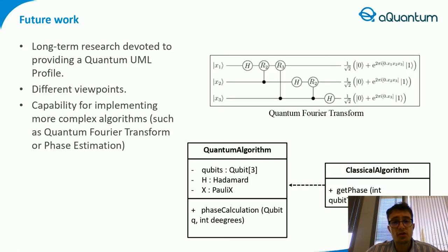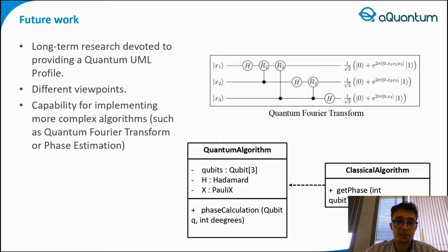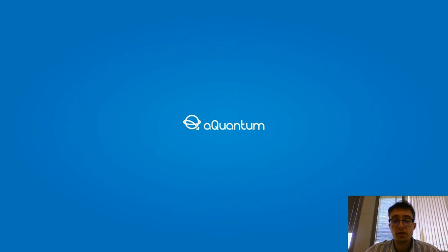This presentation proposes the UML extension as part of more extensive long-term research devoted to providing a quantum UML profile that will cover other viewpoints and aspects of the analysis and design of hybrid information systems. For example, use case, class, sequence, component and deployment diagrams will be extended with the quantum UML profile, and our future research line will comprise precisely this. As future works, the implementation of more complex algorithms, like the quantum Fourier transformation or phase estimation, will be made in order to check the applicability of the UML activity diagram for the approach proposed. That was all, and if you have any questions, you can start making them.